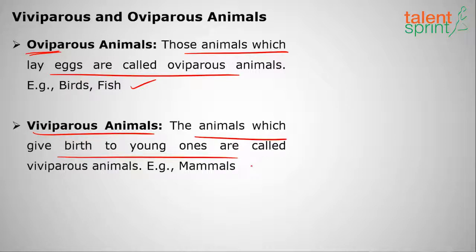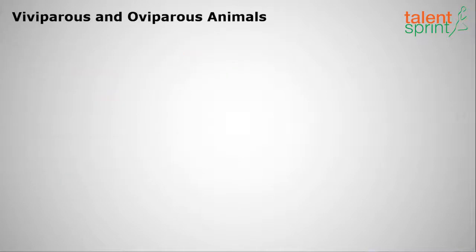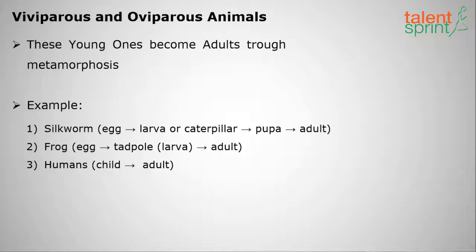Viviparous animals are those which give birth directly to live young ones, like mammals. Some fish also give birth directly to the young one — these are exceptions. We shall see those exceptions later.